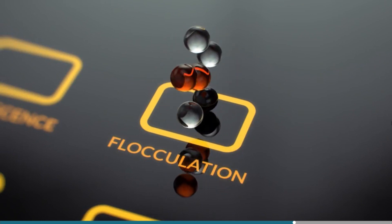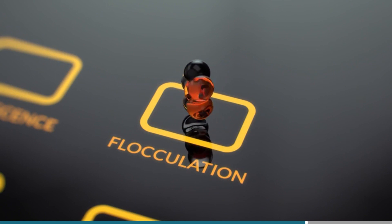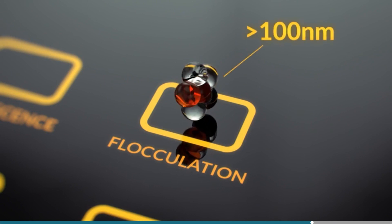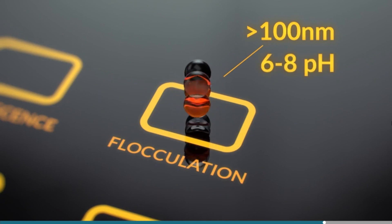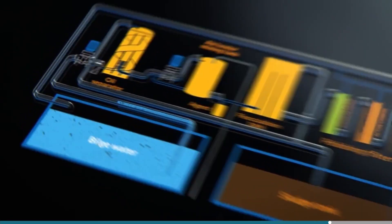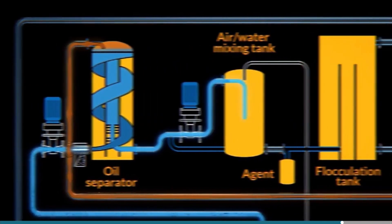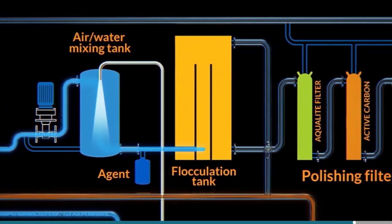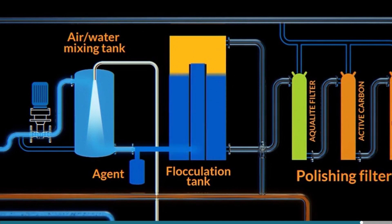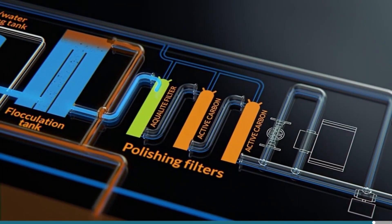Flocculation is a process by which two or more particles aggregate and stick together without losing their individual boundaries. We help the process along by adding a flocculating agent, forming particles larger than 100 nm — called flocks — which then settle. This works best at a pH of 6–8. The stages of separation are: Step 1, oil separation; Step 2, aeration; Step 3, flocculation; Step 4, processing and skimming of flocks; Step 5, filtration through three inline filters; and Step 6, overboard discharge at 0–5 ppm.